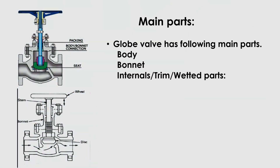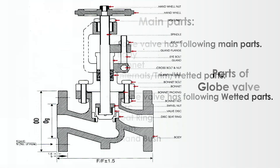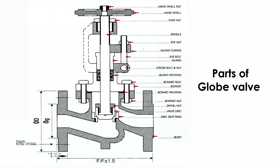Main parts: the globe valve has the following main parts — body, bonnet, internals, trim, and wetted parts. The metal parts include seat and disc, stem, gland, and gland bush. Please see the image for the major parts of the globe valve.